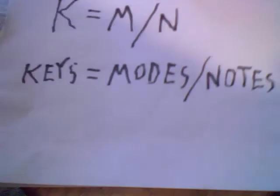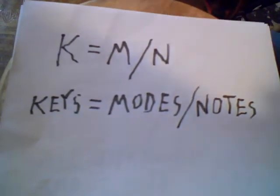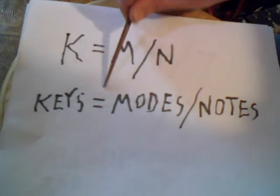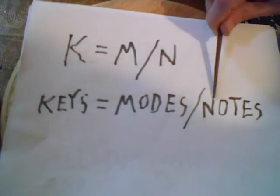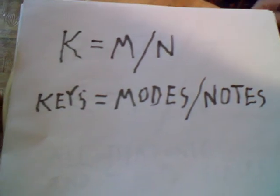It says K equals M divided by N. That means the keys are equivalent to modes divided by notes. Absolutely no break in the logic, absolutely no break in the math because I did come up with it.